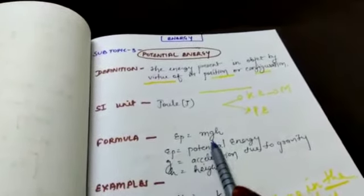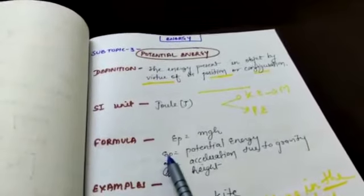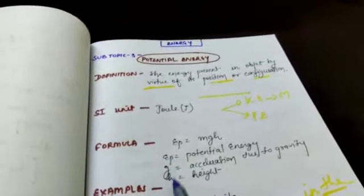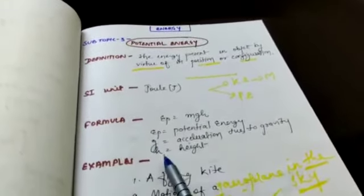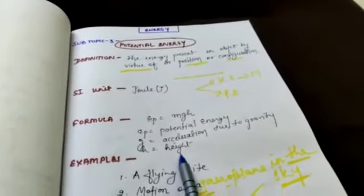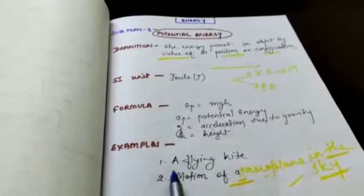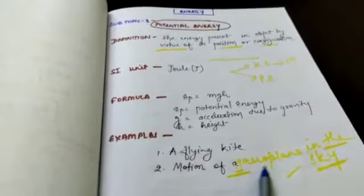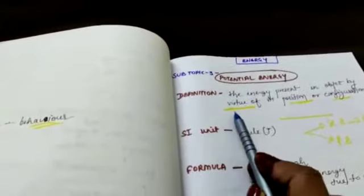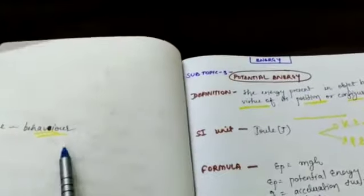Then about formula, EP is equal to MGH. EP is potential energy, M is mass, G is acceleration due to gravity, H is height. Then examples: a flying kite, motion of an aeroplane in the sky. These are the examples of potential energy. Then one new term is there on this page. Virtue. Virtue means behavior.